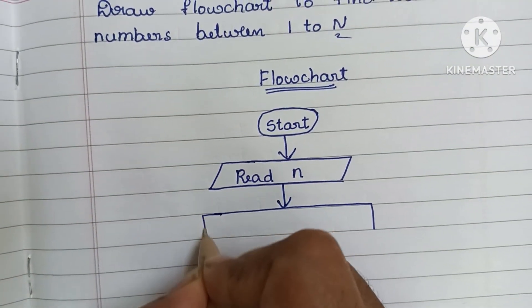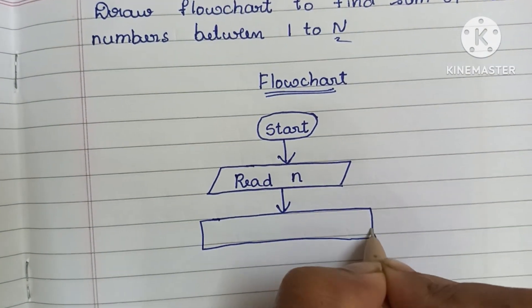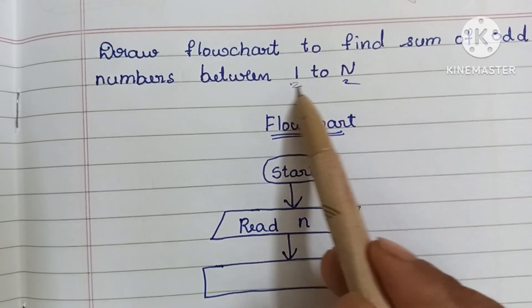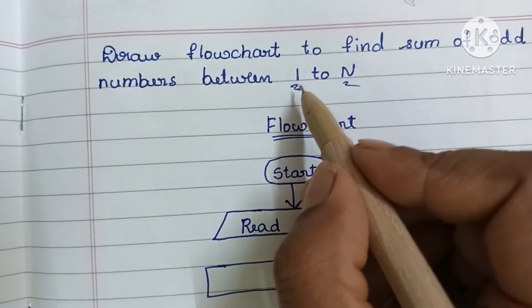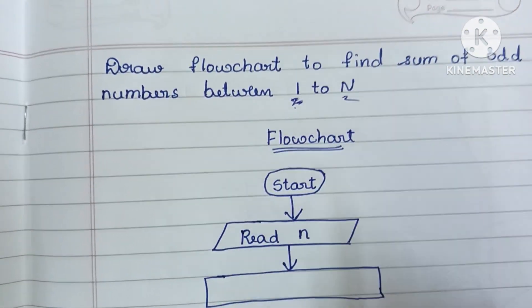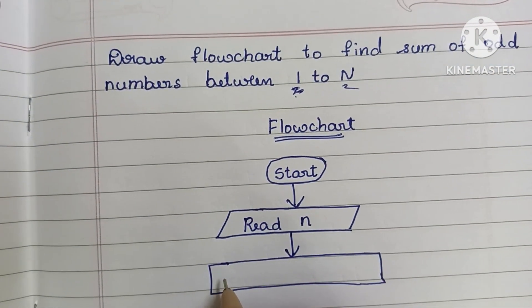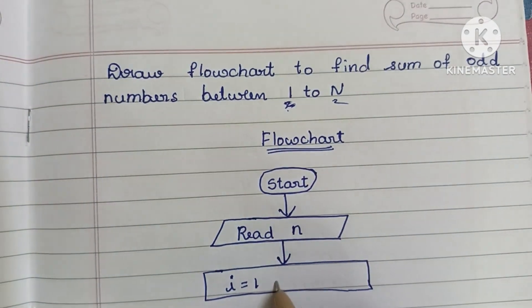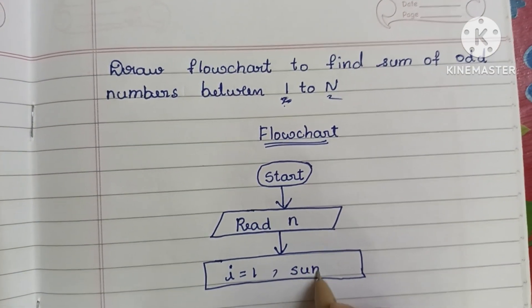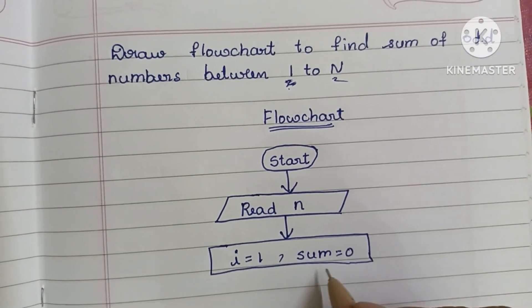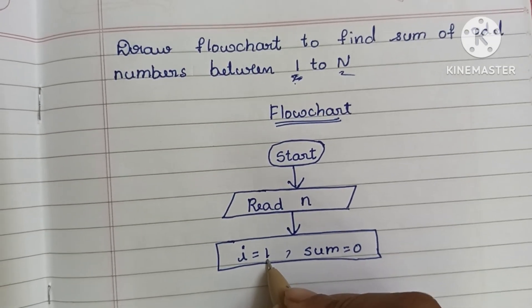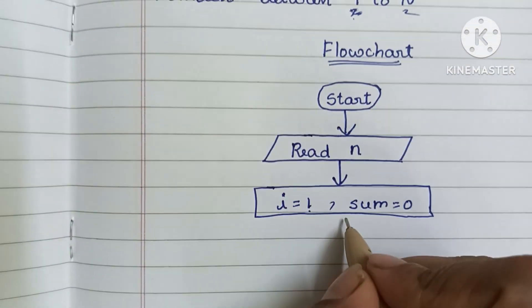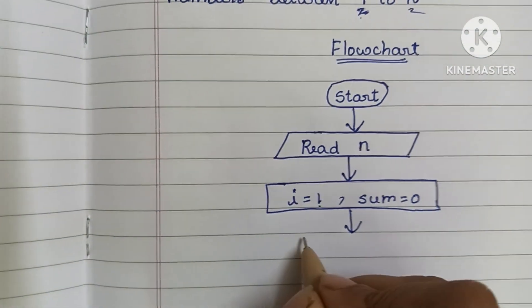Next we have to do the declaration within a rectangular shape. Here we have to declare the values of i and sum. We know that 1 is an odd number — the smallest odd number is 1 — so we declare i equal to 1. Next, sum is equal to 0. Initially sum is equal to 0, so we declare i = 1 and sum = 0.